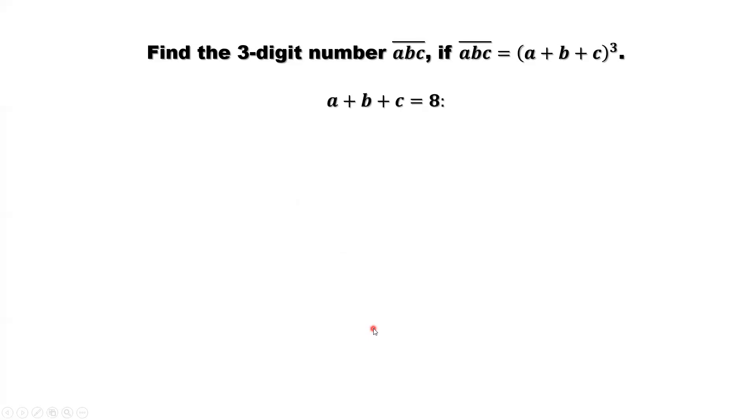If A plus B plus C equals 8, then 8 to the power 3 equals 512. Sum of its digits: 5 plus 1 plus 2 equals 8. 8 to the power 3 equals 8 to the power 3. So this is one answer. We want to check if we still have some other answer.